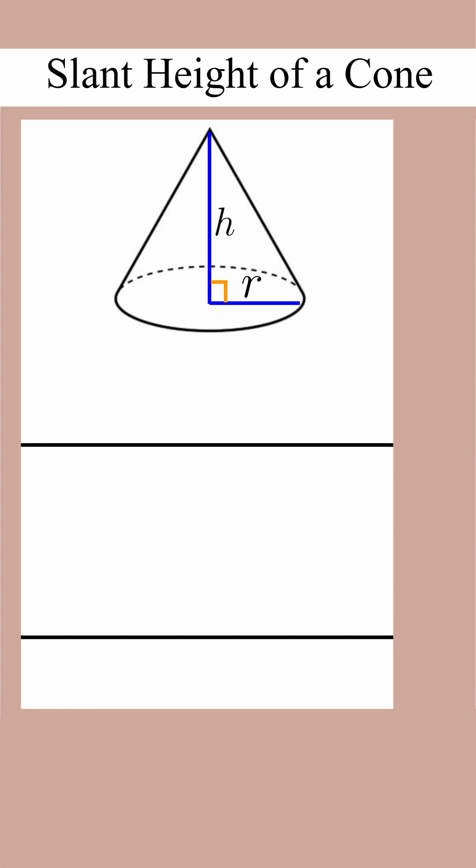We call the hypotenuse of the right triangle formed by r and h, little l, where little l is the slant height.